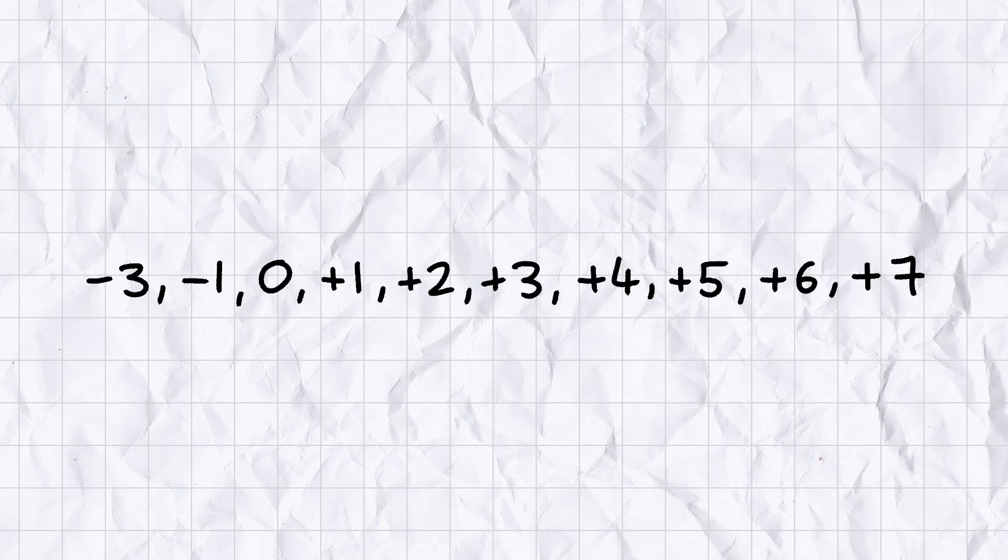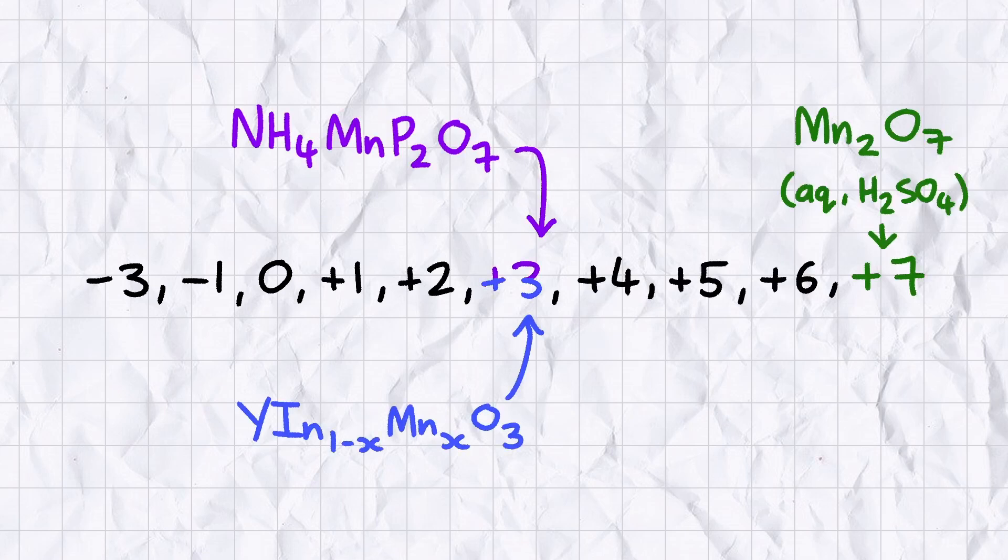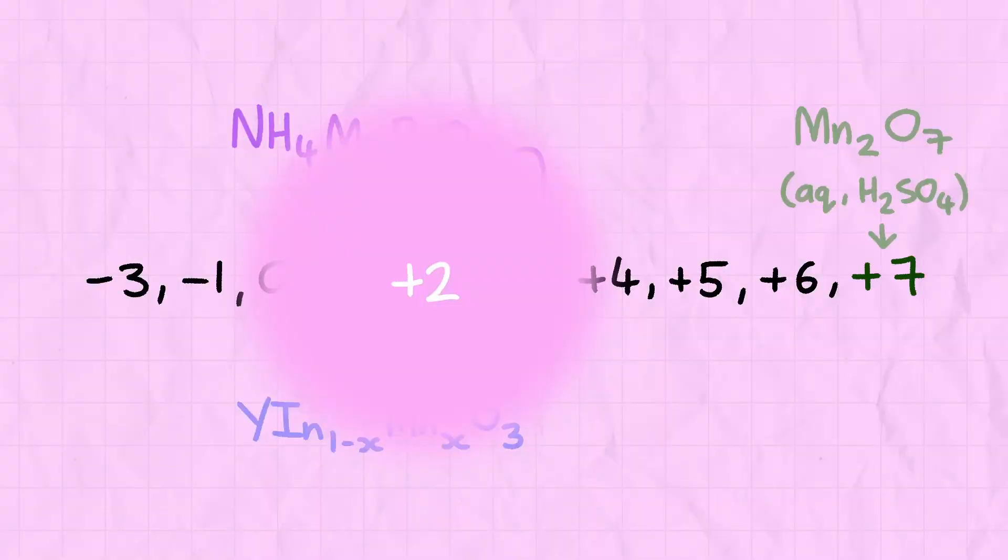Manganese can have an oxidation state between minus 3 and plus 7, which takes it through a range of colours: purple, green, blue. But its most stable state is plus 2, which is usually pale pink.